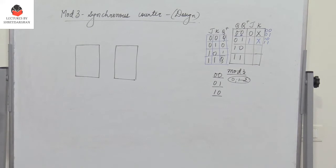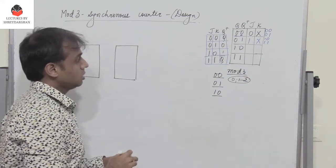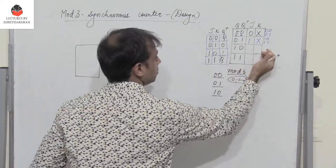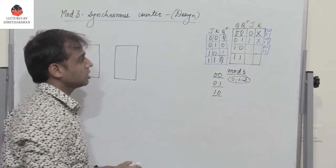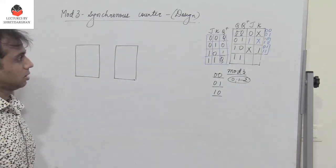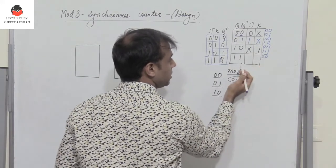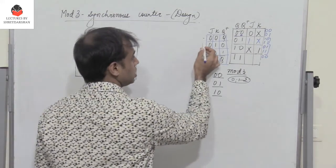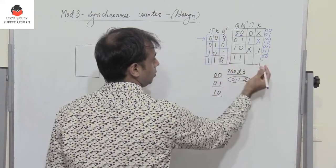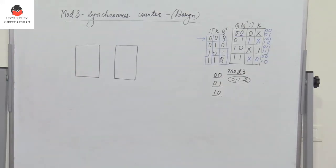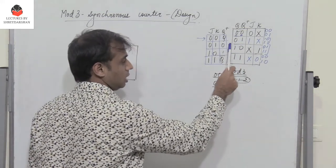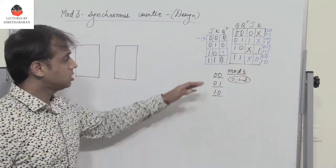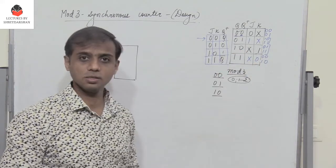For 1 to 0 — present state is 1, next state is 0 — the next state is 0 if I have 0 1, or there has to be a toggle. So it is X 1. For the case 1 to 1 — no change — when I have 0 0 the next state equals the current state, or the output should be 1 when I have 1 0. So J and K is X 0.